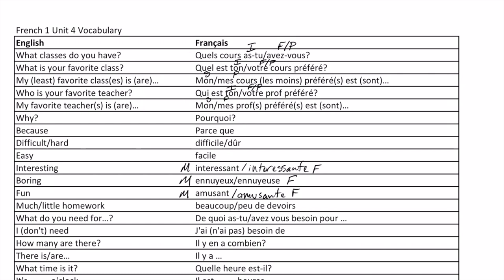'Beaucoup' or 'peu de devoirs' — 'beaucoup de devoirs' or 'peu de devoirs.' 'De quoi as-tu' — for your informal — or 'de quoi avez-vous' — for your formal or plural — 'avez besoin pour?' 'J'ai besoin de,' or for negative, 'je n'ai pas besoin de.' 'Il y en a combien?' 'Il y a.'